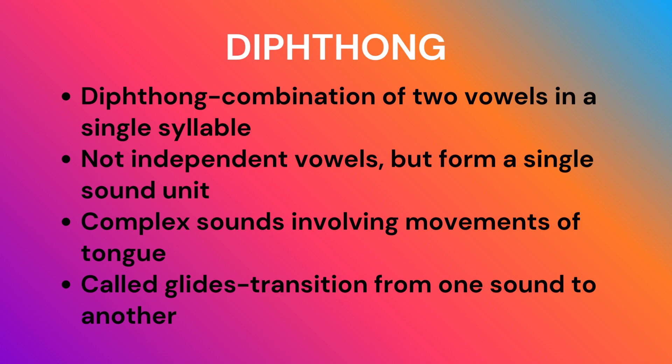So, what's a diphthong? It is a combination of two vowels necessarily in a single syllable. For example, in the words 'go' and 'no', we use the diphthong /əʊ/. However, each of those two vowels in a diphthong may not be independent and are considered to be a single sound unit.